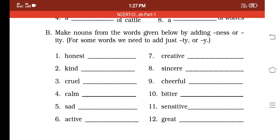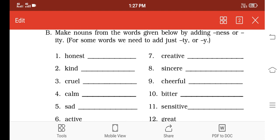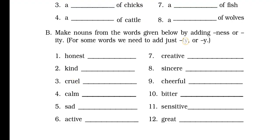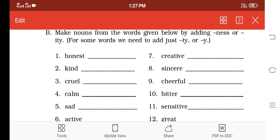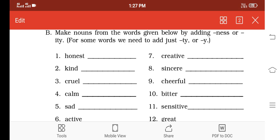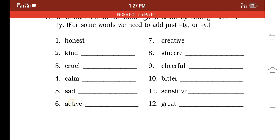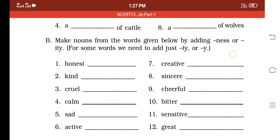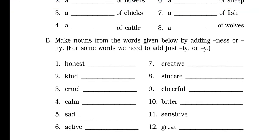Then kind: add -ness there, you get 'kindness.' Cruel: add -ty, 'cruelty.' Calm: -ness, 'calmness.' Sad: -ness, 'sadness.' Active: add -ty there, then you will get 'activity.'